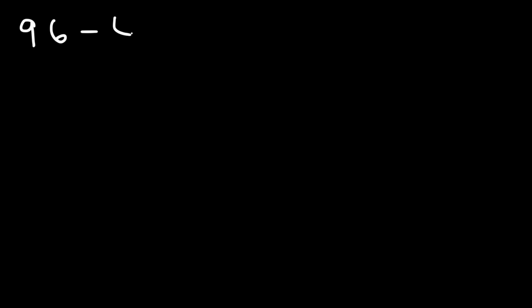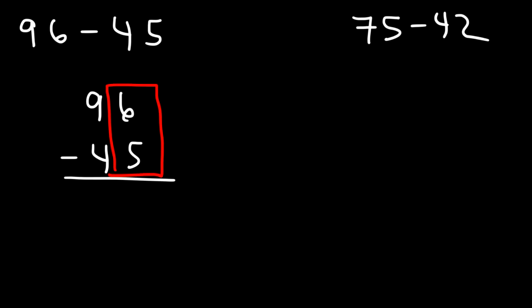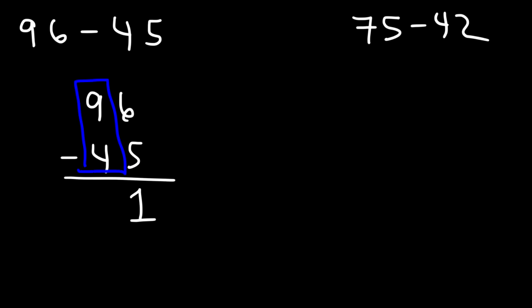Go ahead and try these two examples: 96 minus 45, and also 75 minus 42. So take a minute and work on those problems. Starting with 96 minus 45: we have 6 minus 5, which is 1, and then 9 minus 4, which is 5. So this gives us 51.